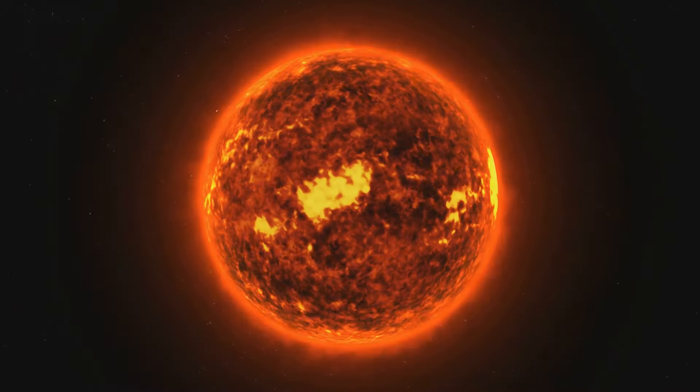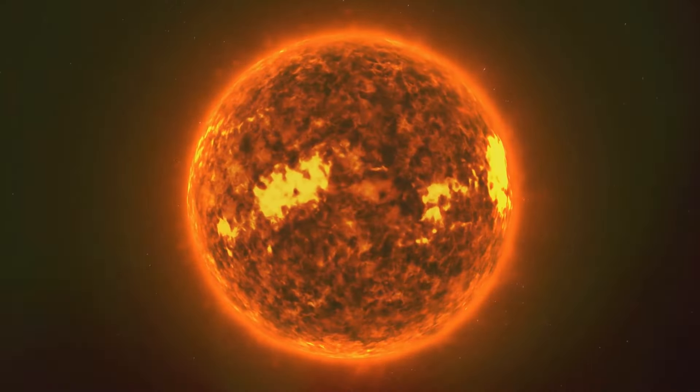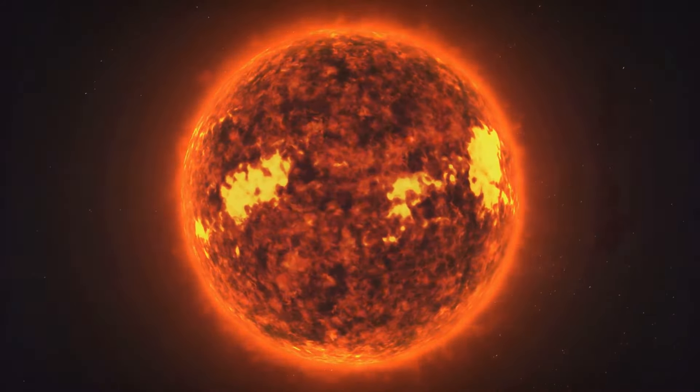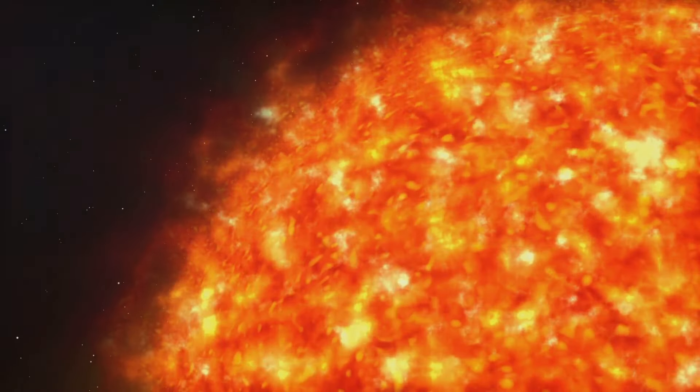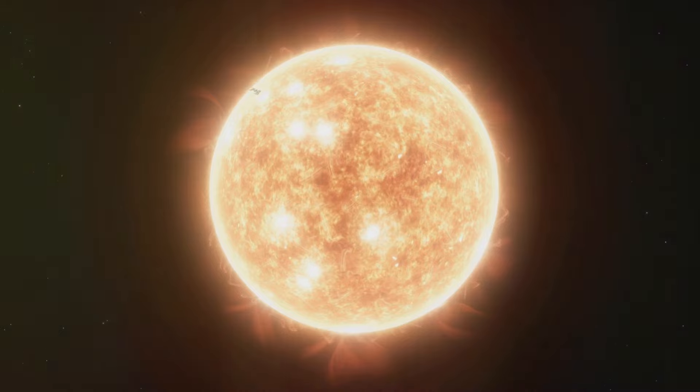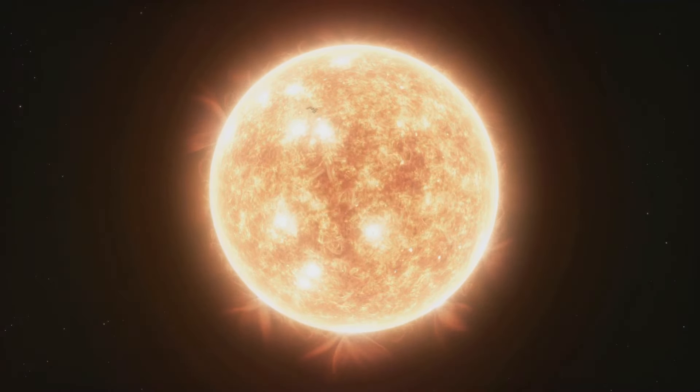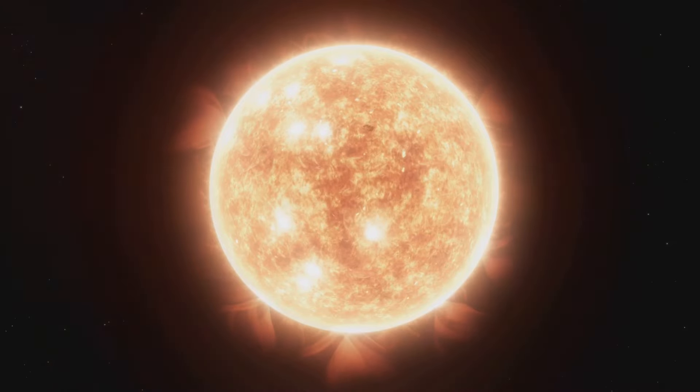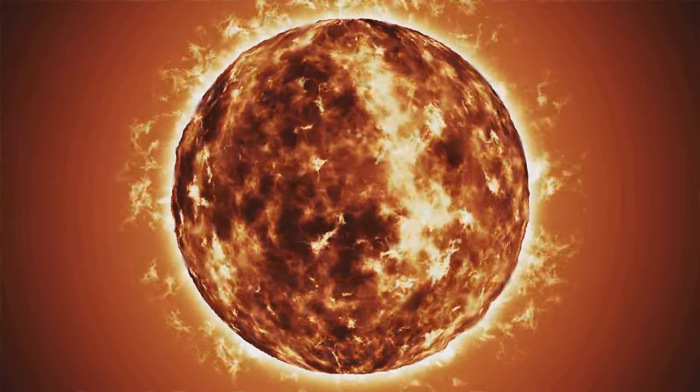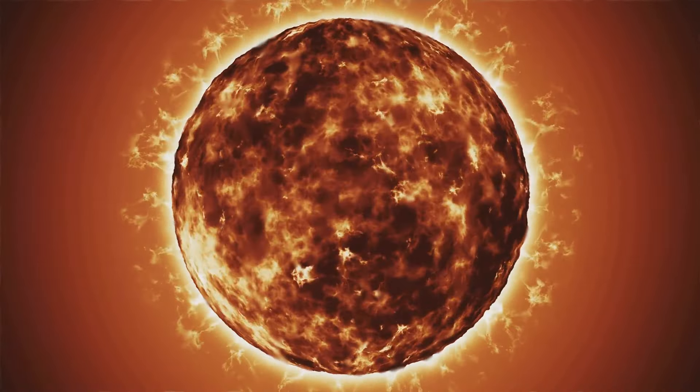The sun's structure is complex, with distinct layers, each playing a crucial role in energy production and transport. The core, the hottest and densest region, is where nuclear fusion occurs. Energy generated in the core travels outward through the radiative zone, then through the convective zone, where hot plasma rises and cooler plasma sinks, creating a churning effect. The sun's visible surface, the photosphere, is the layer from which most of its light and heat escape into space.